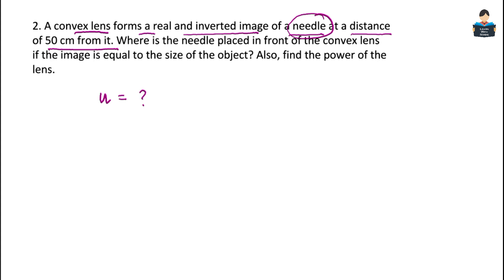Since the image size and object size are equal, the magnification value m equals 1. But since the image formed is real and inverted by a convex lens, the magnification is minus 1. The image distance is 50 cm.